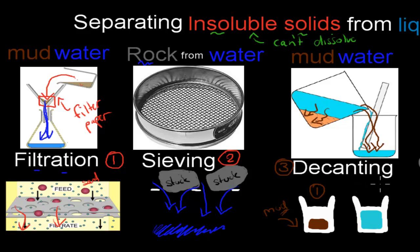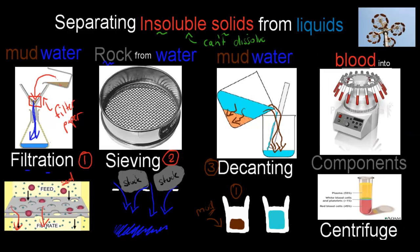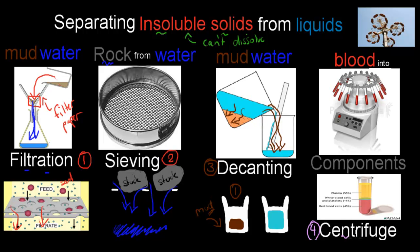And the fourth process that we can separate insoluble solids from liquids is called the centrifuge. So right here, this is the centrifuge. This is pretty cool how that works. It's almost like a carousel or a merry-go-round, a really quick one.